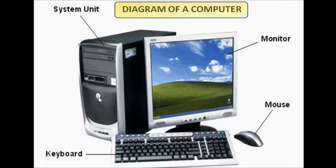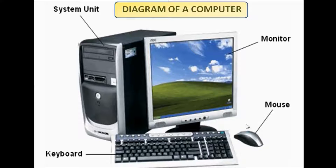Now, next is the keyboard — K-E-Y-B-O-A-R-D. Keyboard is also a hardware device. And this is a mouse — M-O-U-S-E. These are the basic hardware devices of a computer.